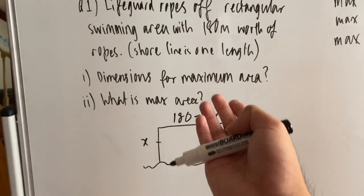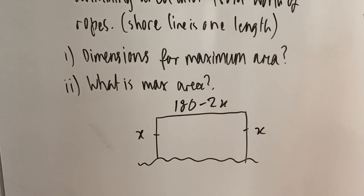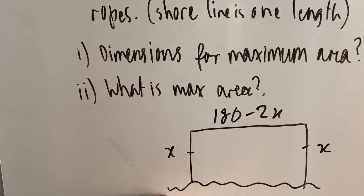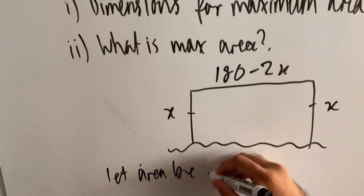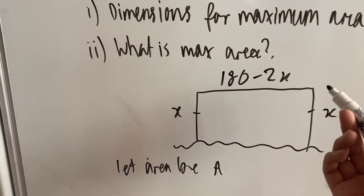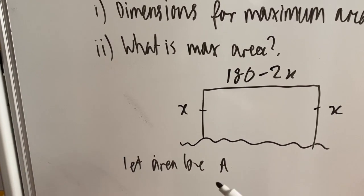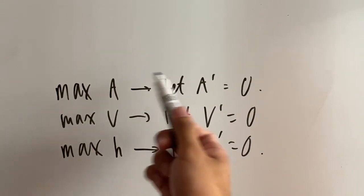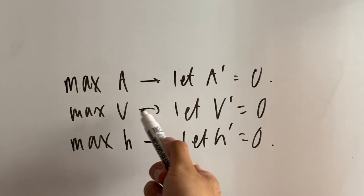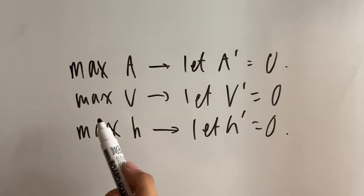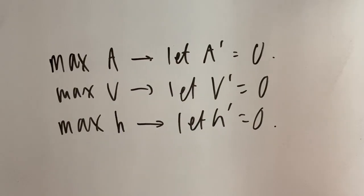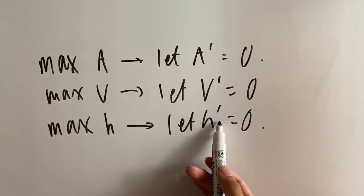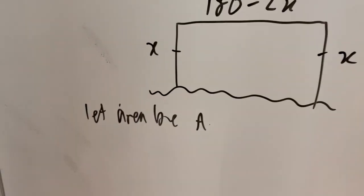Anyways, we need to find the maximum area. Whenever you want to find the maximum area, what you always need to do is let the area be A. We're going to give it a name first. Let area be A. And if you want to find the maximum area, all you need to do is let A dash equal to zero. So I just wrote some notes for you guys up here. If you want to find a maximum area, you let A dash equal to zero. If you want to find a maximum volume, you let V dash equal to zero. And if you want to find a maximum height, you let H dash equal to zero. Do you guys kind of see the pattern here? It's just whatever you're trying to find a maximum of, you get the dash of that and you make it equal to zero.